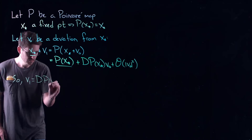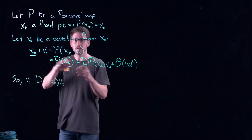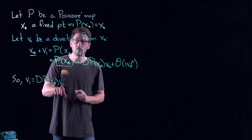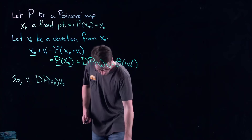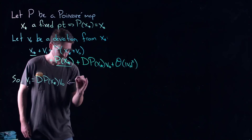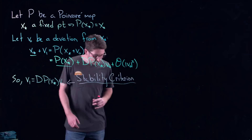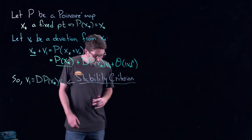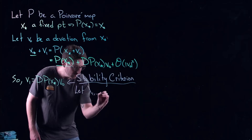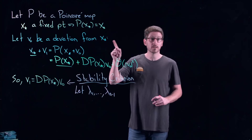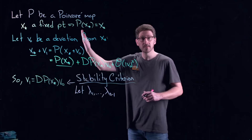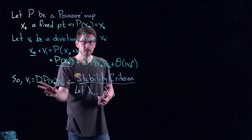The linearized Poincaré section says approximately: I take my initial deviation from x* and multiply it by the Jacobian matrix to get where I'm going next. Now remember, the Poincaré section is one dimension smaller than the original dynamical system. The original system is n-dimensional, so the Poincaré mapping is (n−1)-dimensional. That means the linearized Jacobian matrix here is (n−1)×(n−1) and has n−1 eigenvalues.